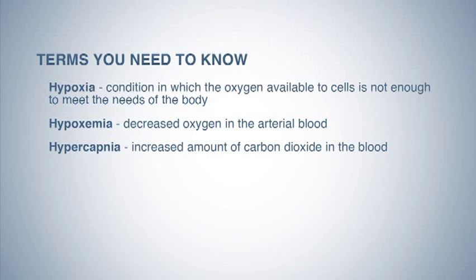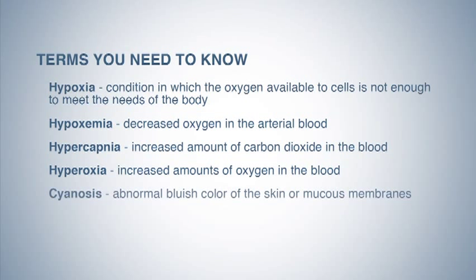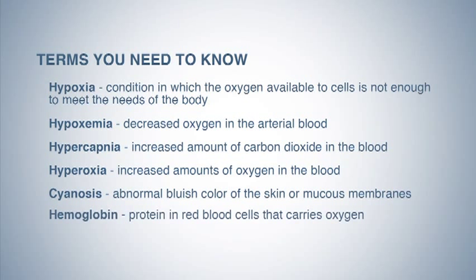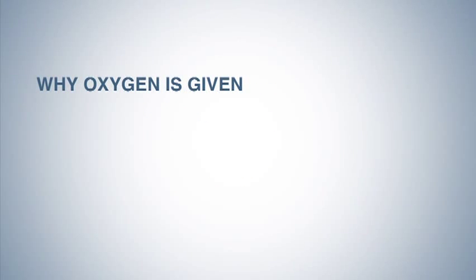Hypercapnia is an increased amount of carbon dioxide in the blood. Hyperoxia is an increased amount of oxygen in the blood. Cyanosis is an abnormal bluish color of the skin or mucous membranes. And hemoglobin is a protein in red blood cells that carries oxygen.